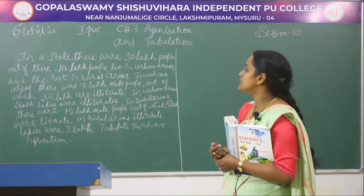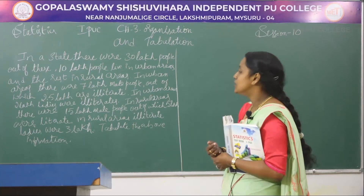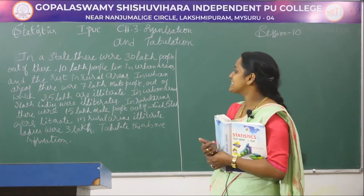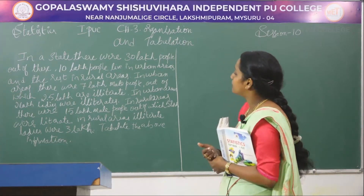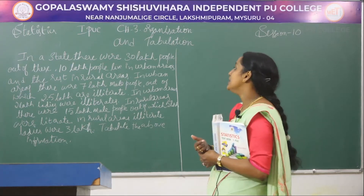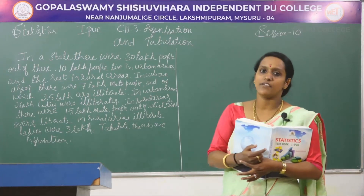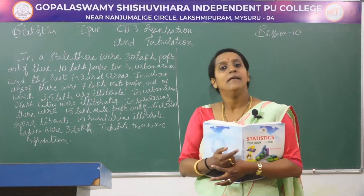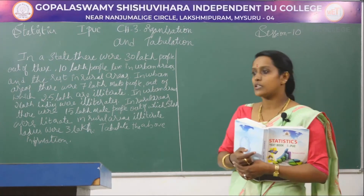In urban areas there were 7 lakh male people, out of which 2.5 lakhs were illiterates. In urban areas 2 lakhs ladies were illiterates. So here we have to categorize literates and the illiterates about men and women, and that will come in the row headings.